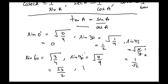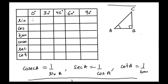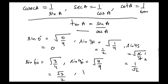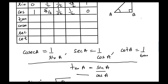Simplifying those values: sine 0° = 0, sine 30° = 1/2, sine 45° = 1/√2, sine 60° = √3/2, and sine 90° = 1. The cosine values from 0° to 90° are just the reverse of the sine values, so: cos 0° = 1, cos 30° = √3/2, cos 45° = 1/√2, cos 60° = 1/2, and cos 90° = 0.